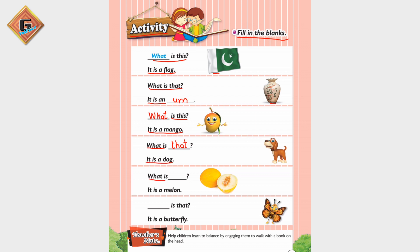'What is...' — now what do we write here? 'This.' Because the melon is near to us. 'What is this?' — so the answer is 'It is a melon.' 'It is a melon.'